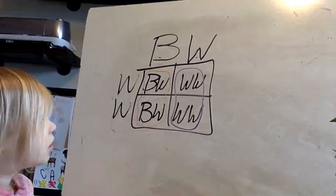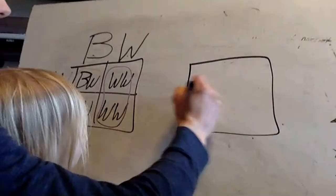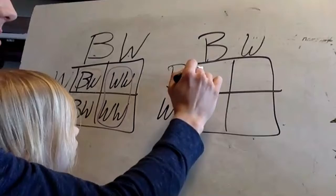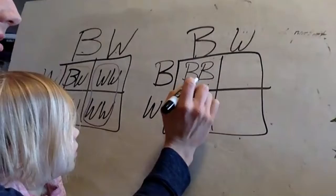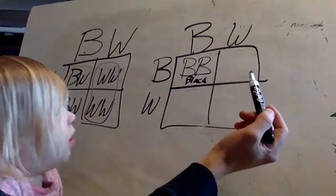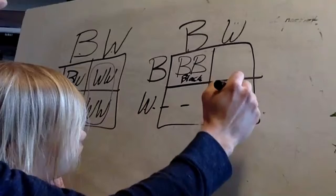Let's do another cross. This parent has a black and a white allele, and so does this one. Let's fill in the Punnett square. What's this letter? B. And this one? B. So those go into this box — BB — black and black. What color is this one going to be? Black — good.